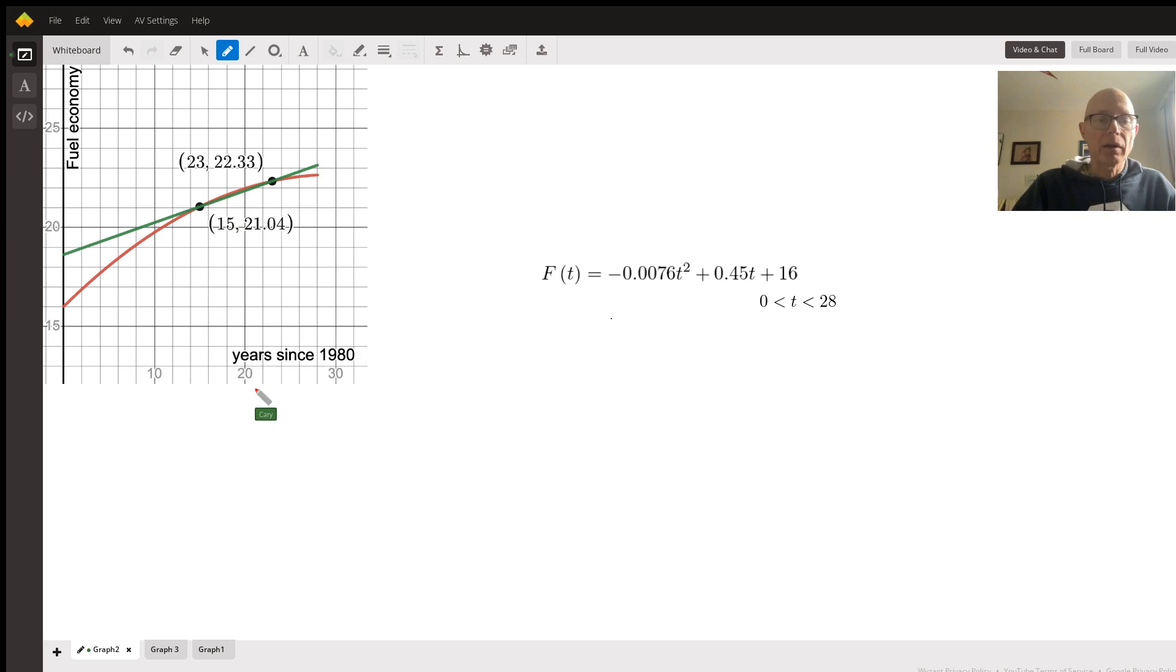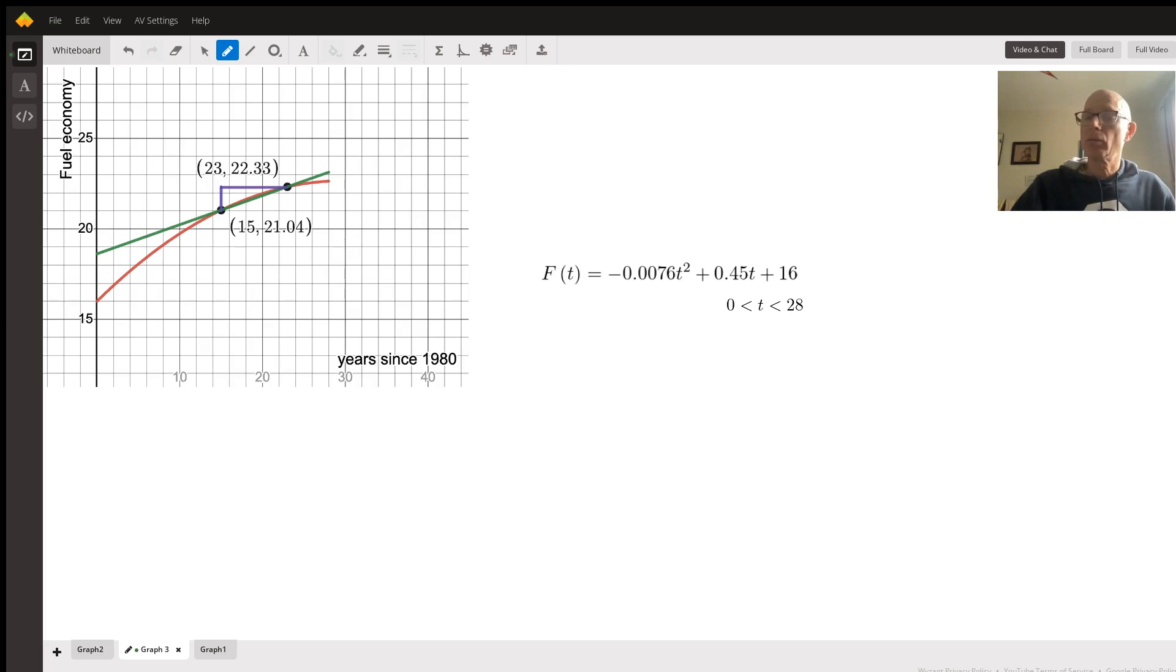Okay, we can find the slope of the green line with our old standby, the rise over the run. In order to find the rise, we would find the difference between our two outputs. So that's going to give us this distance, the difference between 22.33 and 21.04. And that is going to be what we put on the top of our fraction.